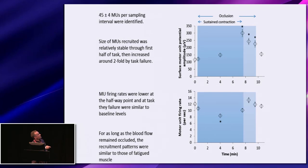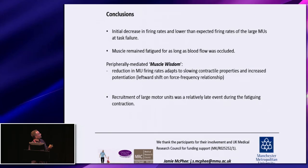This recovers when the blood flow is released again. Not quite here with the firing rates. So to conclude, we think there's an initial decrease in firing rates and lower than expected firing rates of the large motor units at task failure.